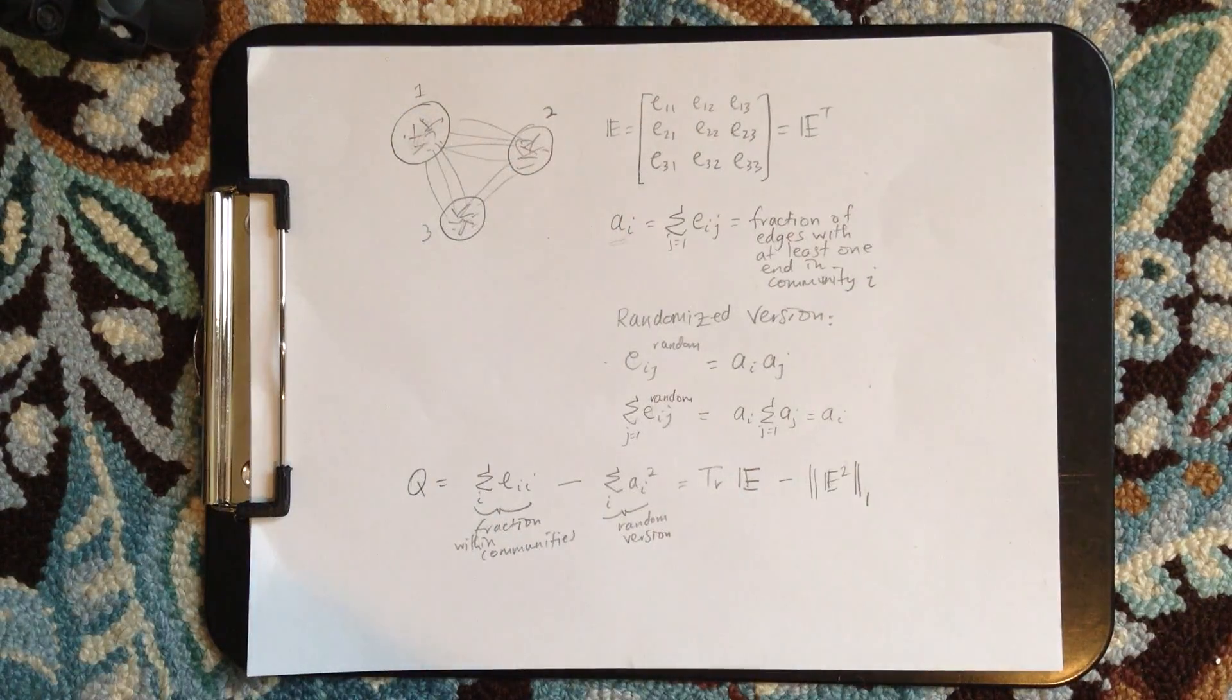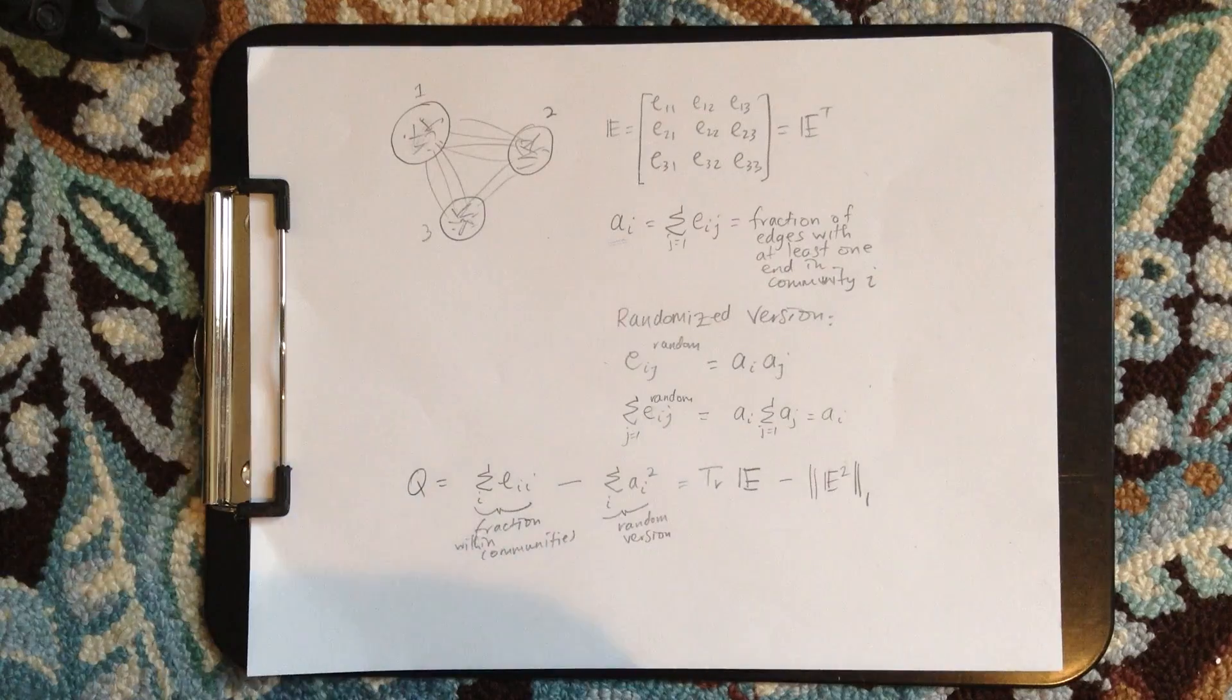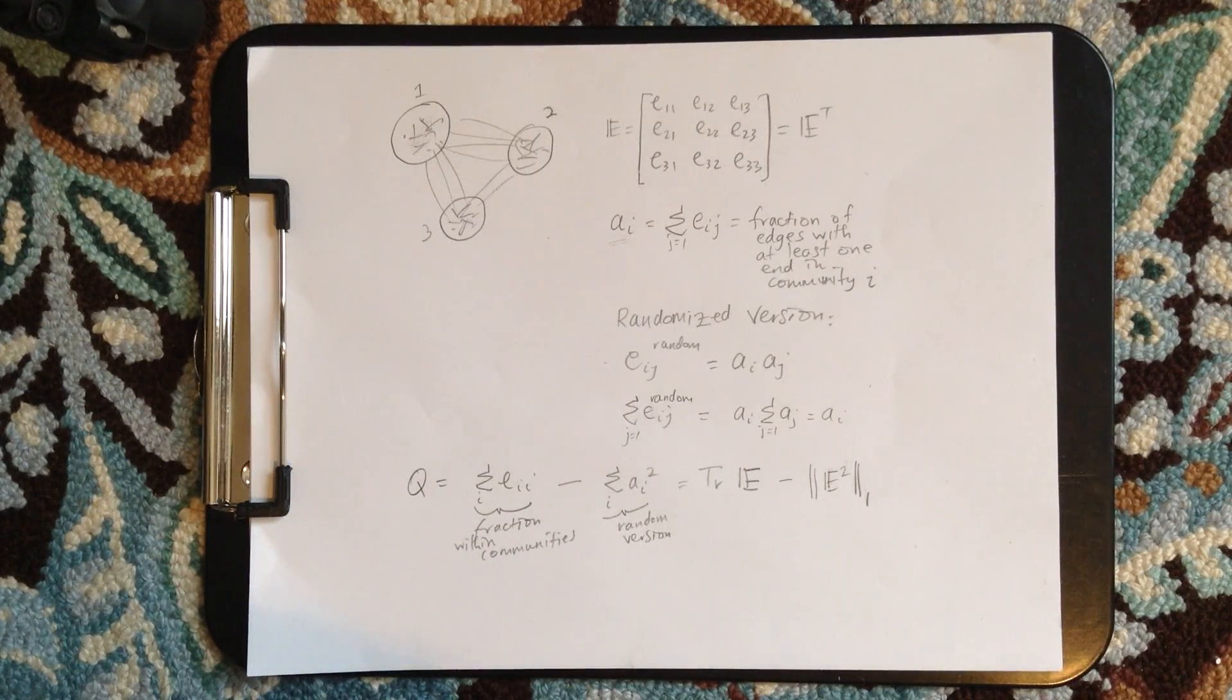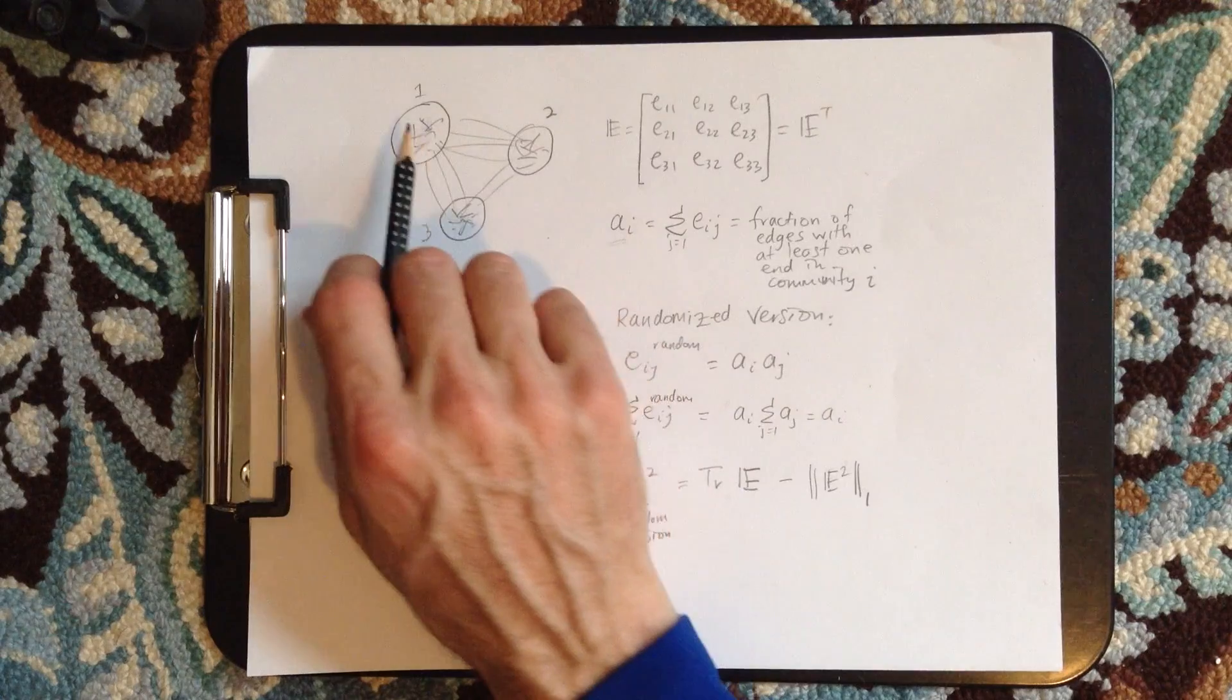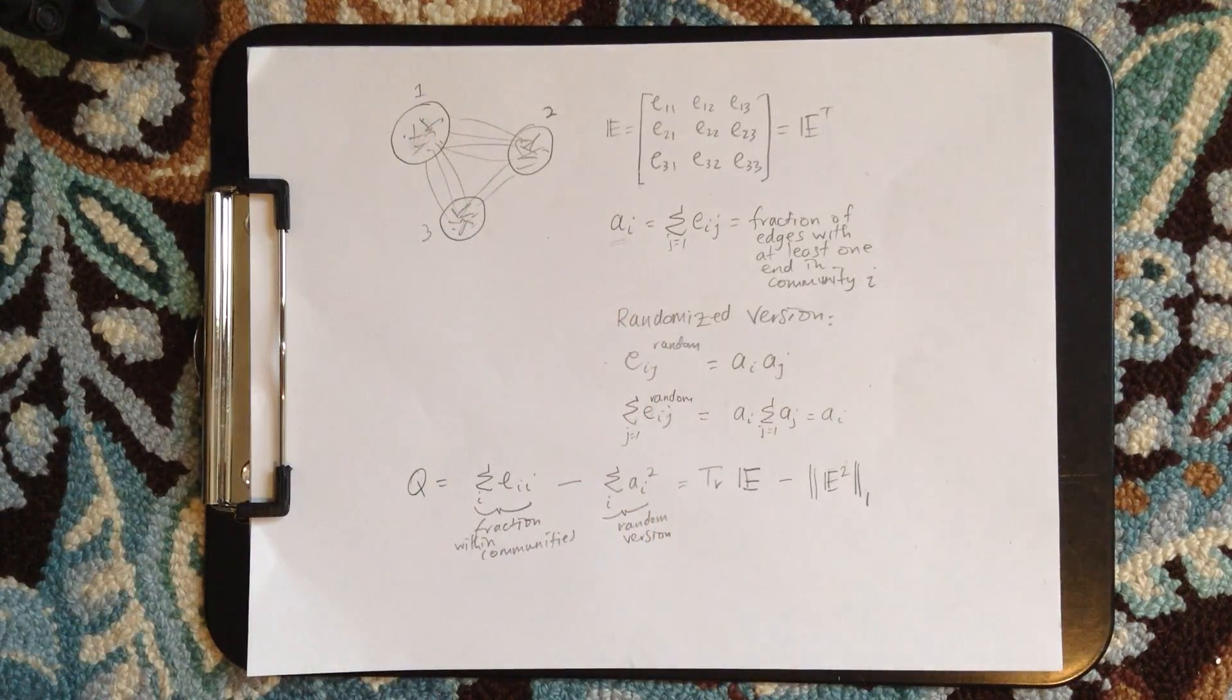So that's a good thing to know. So once we start to then think about a random version of this, we always want to compare to a random version and many of the things we do, then we'll need to kind of understand the degree of these things.